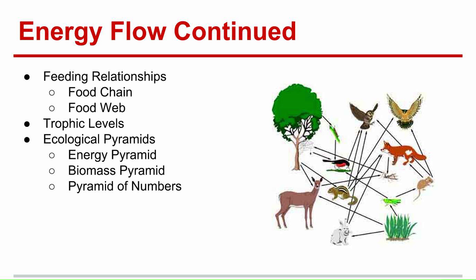Each step in the food chain is called a trophic level. The first trophic level is the producers, and then the second trophic level and anything above are consumers.